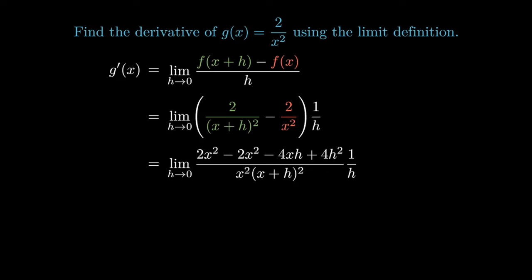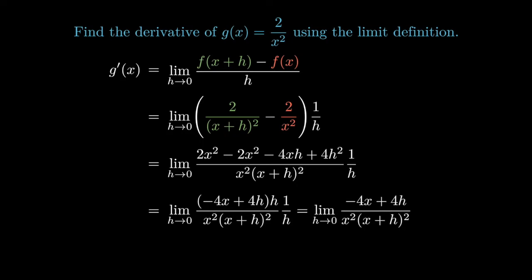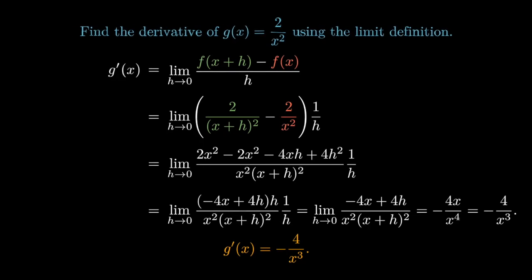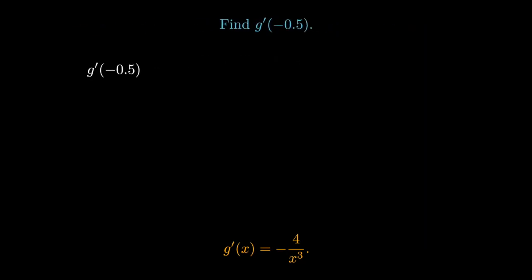Once again, we may expand, and when we simplify the factors of h, what remains may be evaluated at h = 0 without producing an undefined value. g'(x) = -4/x³. We can also evaluate this value wherever we wish.